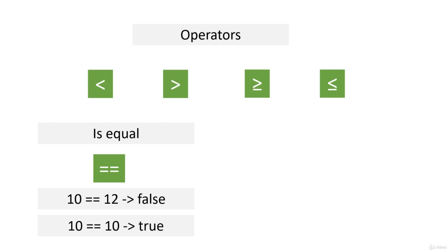You can use variables as operands. So instead of 10, you can have a variable, and instead of 12, you can have another variable, and check whether they contain the same value. Another heavily used operator is the not equal operator, which is defined as an exclamation mark and equal sign.